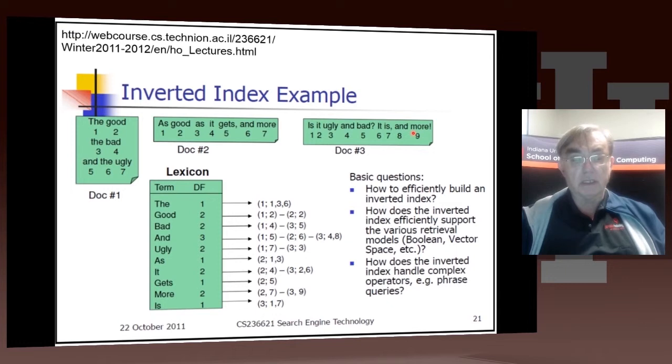So here's just a simple example with three documents: the good, the bad, and the ugly; as good as it gets and more; is it ugly and bad, it is and more. Those are three documents. Here we haven't done stopping. So the is word one, good is word two, the is word three, and so on.